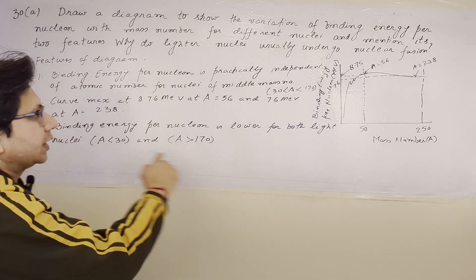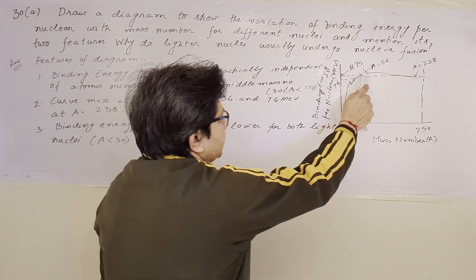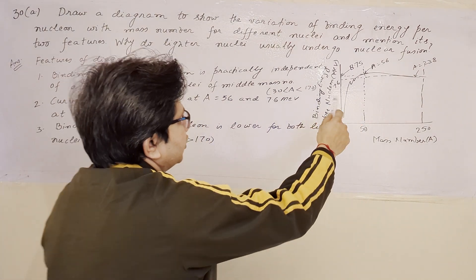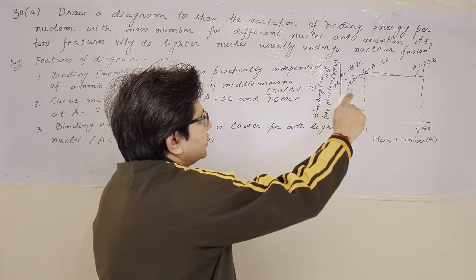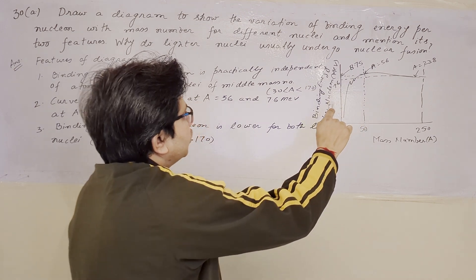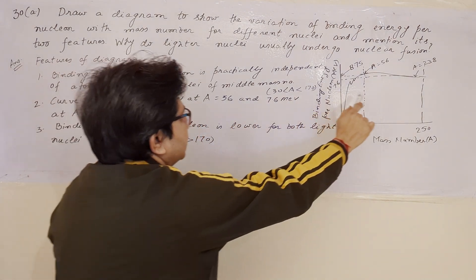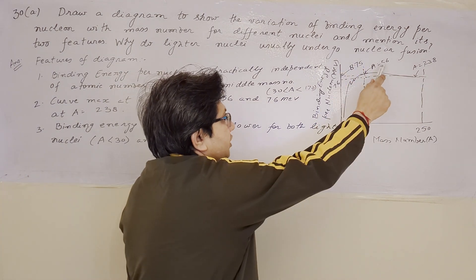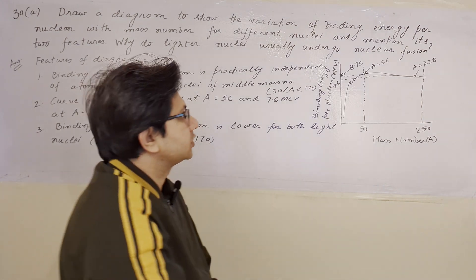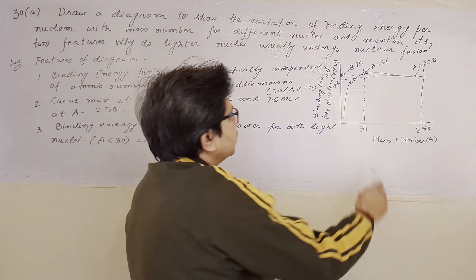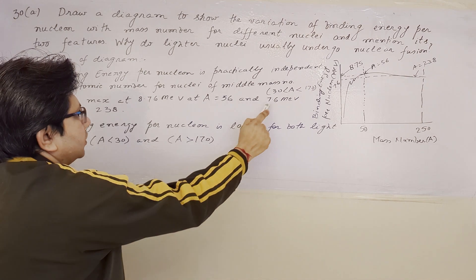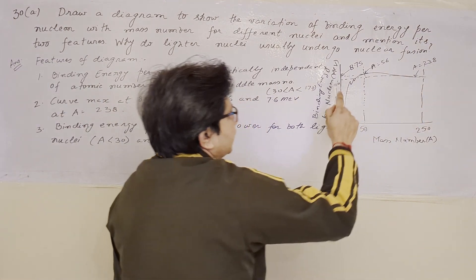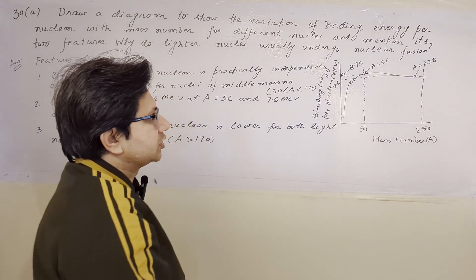The second point is that there is a maximum value of about 8.75 to 8.76 MeV, which we obtain for the mass number A equals to 56. For A equals to 238, we get the value of nearly 7.6 mega electron volts.